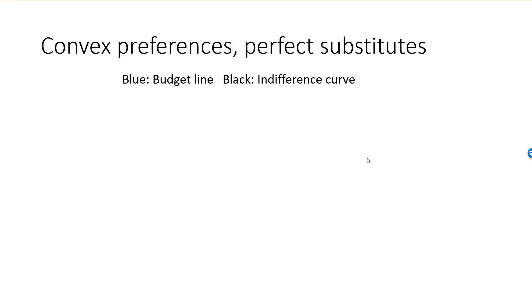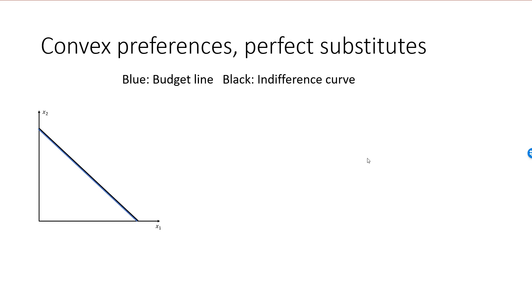If we have two goods that are perfect substitutes, then preferences are convex but not strictly convex, and multiple optimal bundles is a possibility. Remember, if two goods are perfect substitutes, each indifference curve will be a straight line. In the first graph, the slope of the indifference curve is equal to the slope of the budget line, and there will be an indifference curve completely overlapping the budget line.